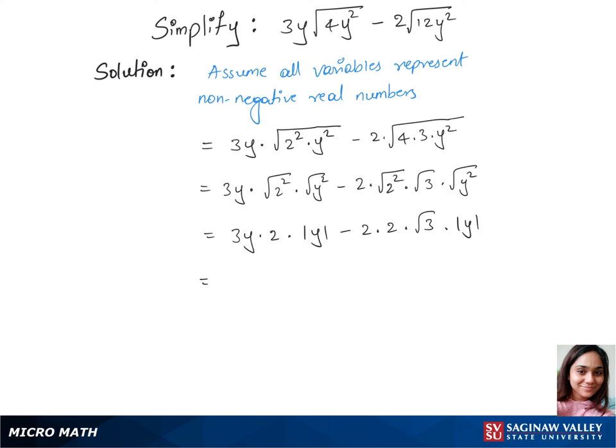Now we have 3 times 2 is 6, and y times y is y squared, minus 2 times 2 is 4, root 3 y. This is our final answer. Thank you and take care.